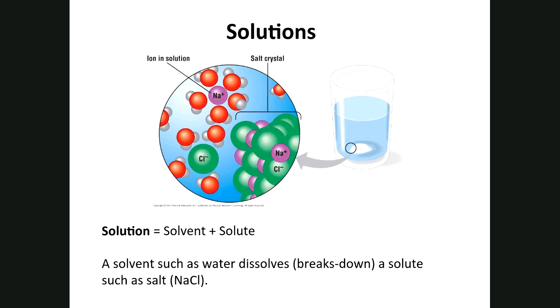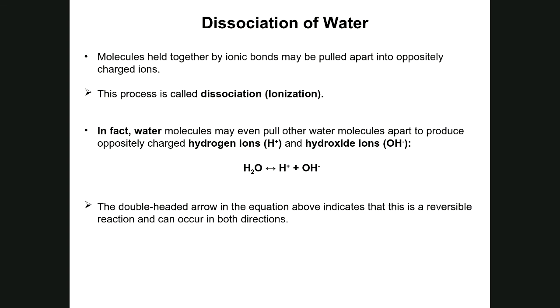When we talk about pH and buffers, we're talking about solutions. pH has to do with measuring the concentration of protons, also known as hydrogen ions or hydronium ions, in solution. Looking at the dissociation of water: compounds held together by ionic bonds may be pulled apart into two oppositely charged ions. Water can break ionic bonds pretty easily; it's covalent bonds that are difficult for water to break.